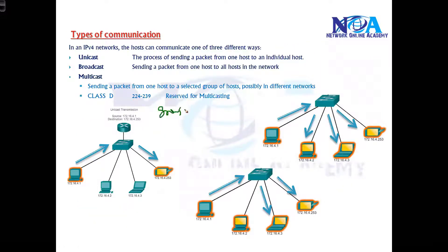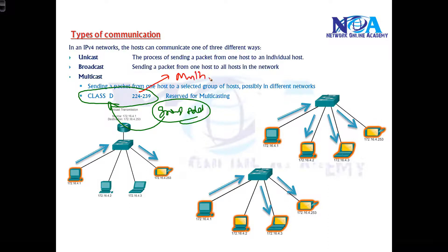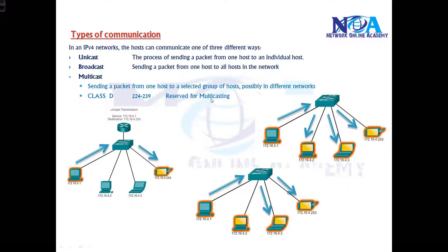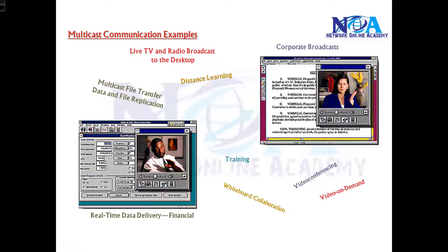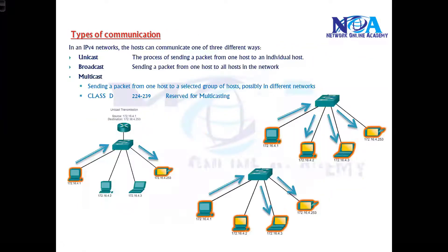To host these multicast applications, they use a special group address, which falls in the range of Class D, reserved for multicasting. Multicast is a big concept — in advanced topics like CCIE classes, you'll see how multicast works and how to enable it on your network. For now, understand that in multicast, a group of individuals joins a specific session and only those people can listen.